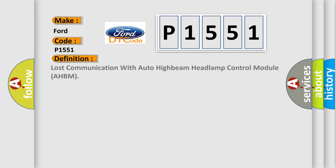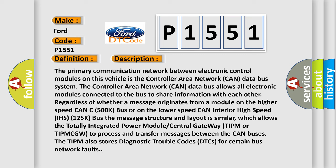The basic definition is: lost communication with auto high-beam headlamp control module (AHBM). The primary communication network between electronic control modules on this vehicle is the controller area network (CAN) data bus system. The CAN data bus allows all electronic modules connected to the bus to share information with each other, regardless of whether a message originates from a module on the higher speed CAN C500K bus or on the lower speed CAN interior high speed (IHS) 125K bus. The message structure and layout is similar, which allows the totally integrated power module central gateway (TIPM or TIPMCGW) to process and transfer messages between the CAN buses. The TIPM also stores diagnostic trouble codes (DTCs) for certain bus network faults.